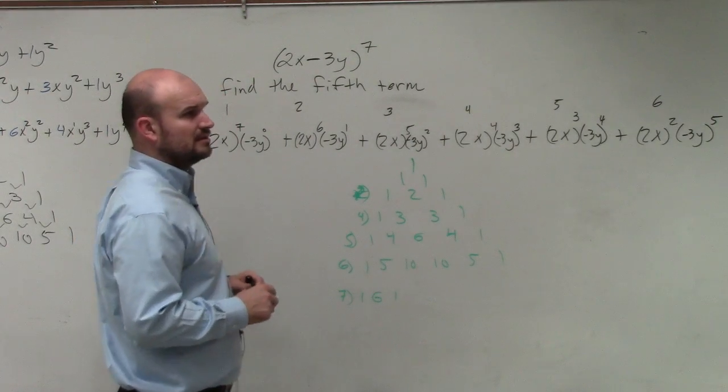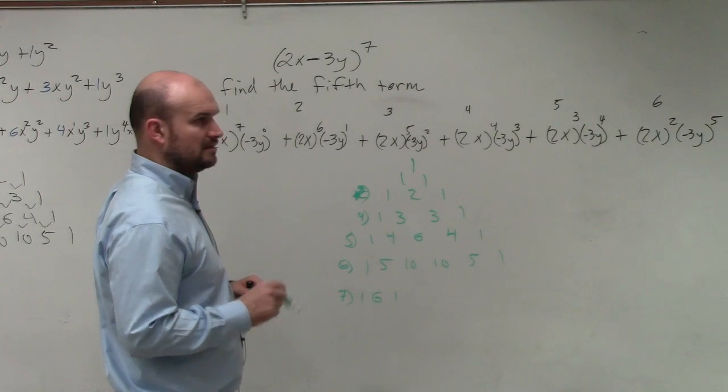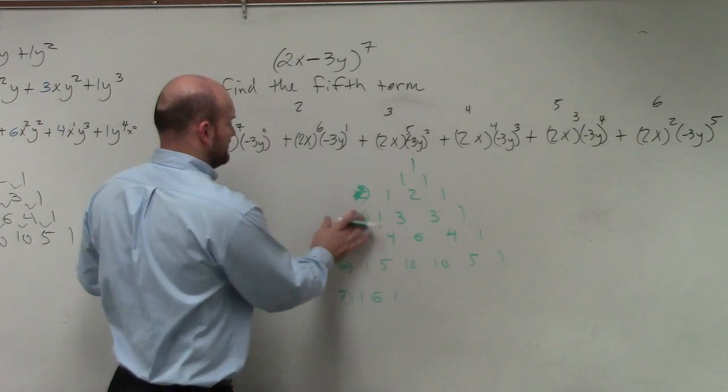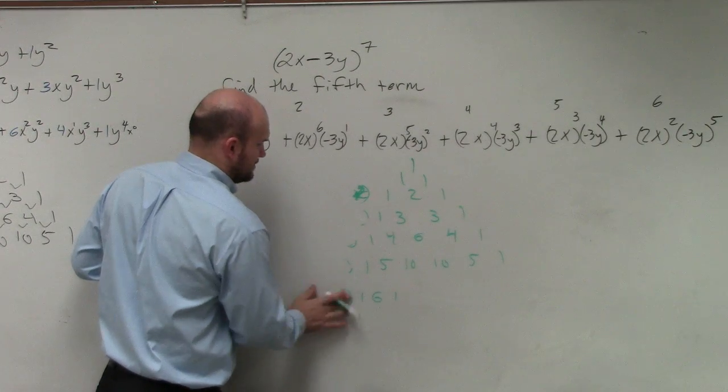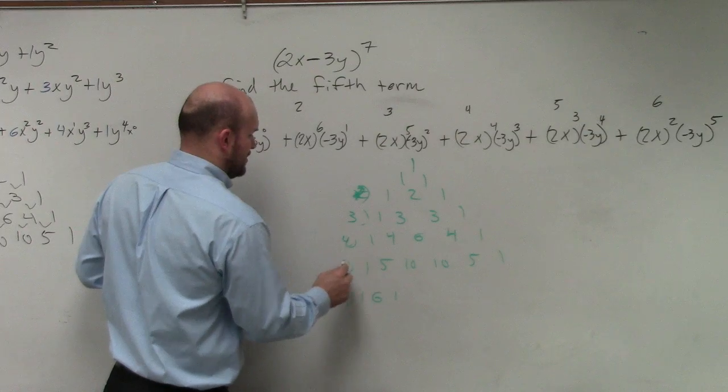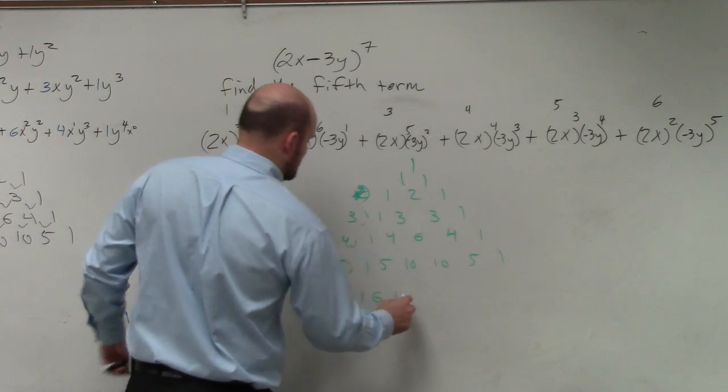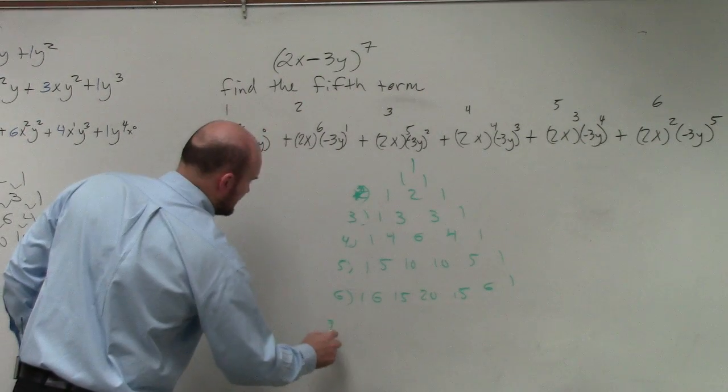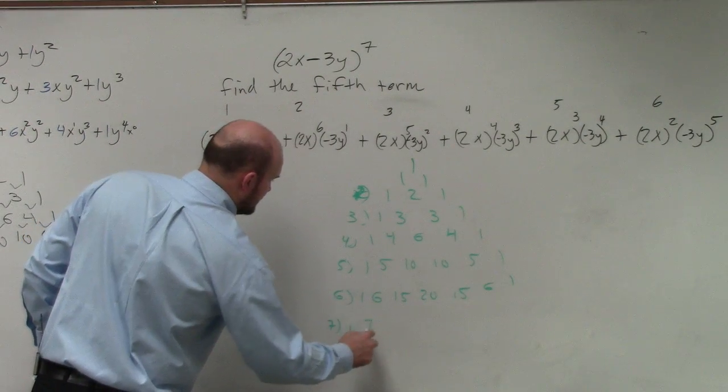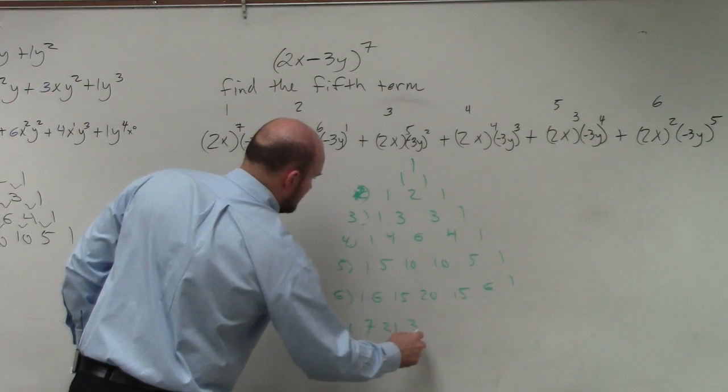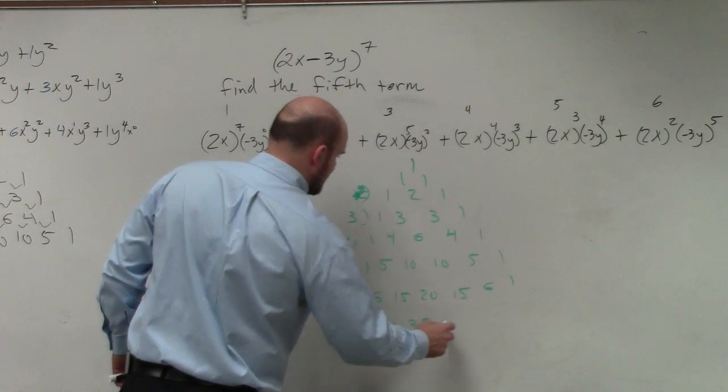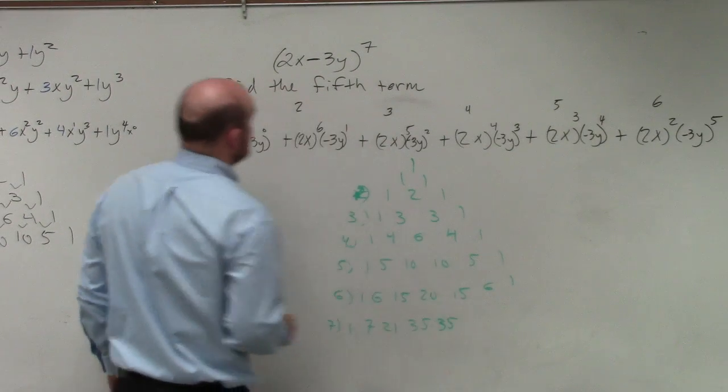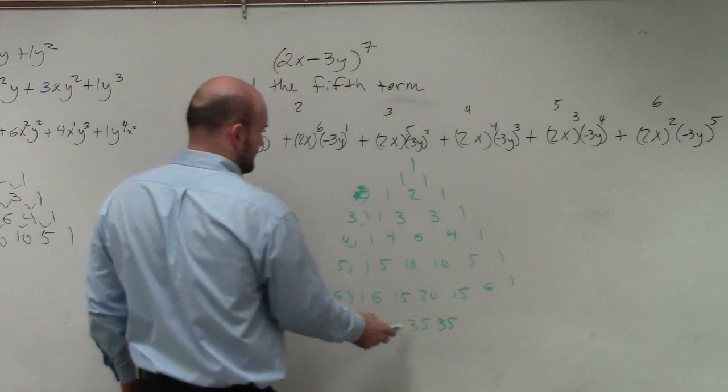6 squared. Did I miss? Oh, I skipped a 3. So that's 3, 4, 5, 6. So that's 15, 20, 15, 6, 1. And then last but not least, we have 7. So that's going to be 1, 7, 21, 35, 1, 2, 3, 4, 35. And I said what, the fifth term? So 1, 2, 3, 4, fifth term.